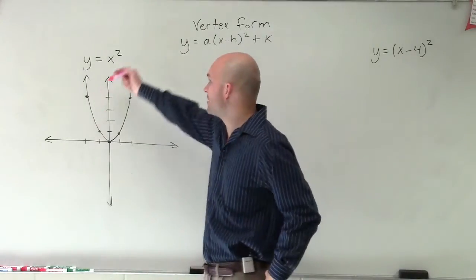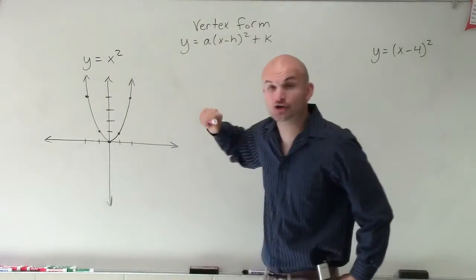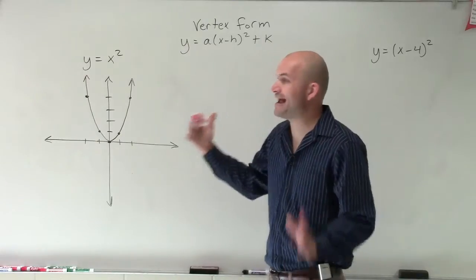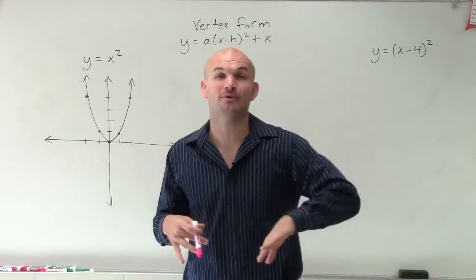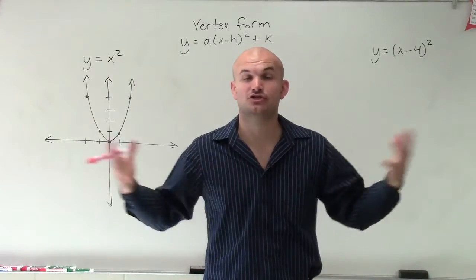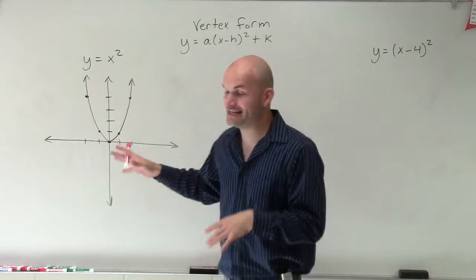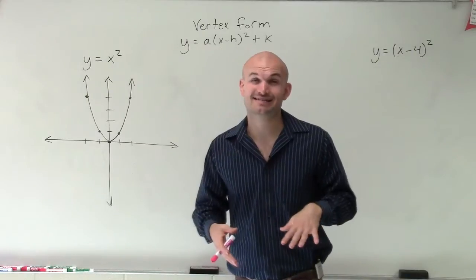So when we look at a parent graph, we know that a equals 1 and h and k are both going to be 0. And if you can remember, a is going to reflect either up or down and also dilate, either stretch or compress the graph, where h is going to shift the graph left to right, and k is going to shift it up or down.